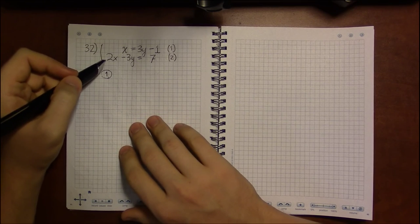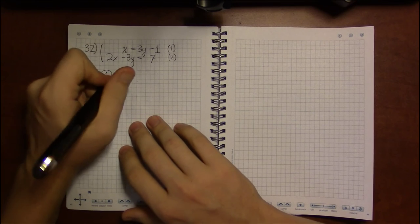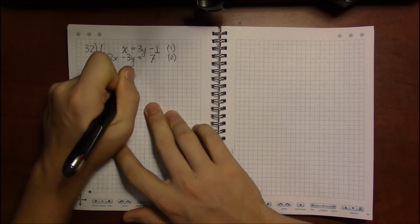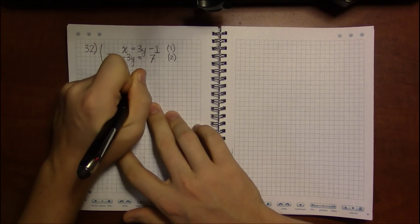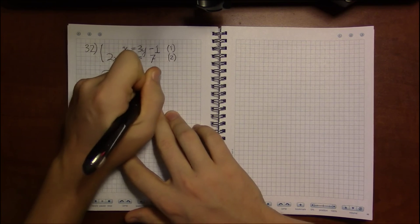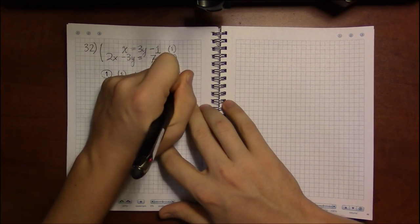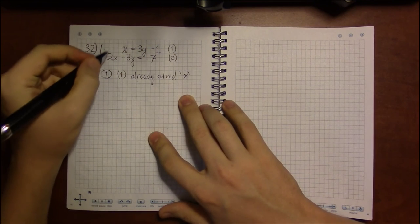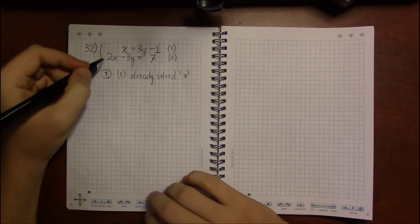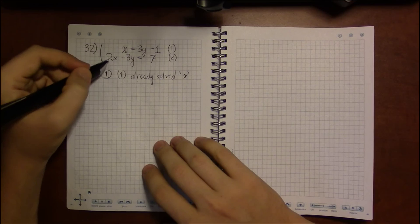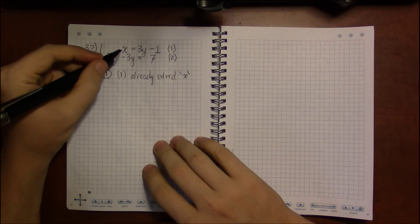Our first step, we need to pick an equation and solve for a variable, but this is already done. Equation 1 is already solved for x, because x is by itself in equation 1. And we're lazy. We like to minimize the amount of work that we need to do. So we'll just leave equation 1 as it is.